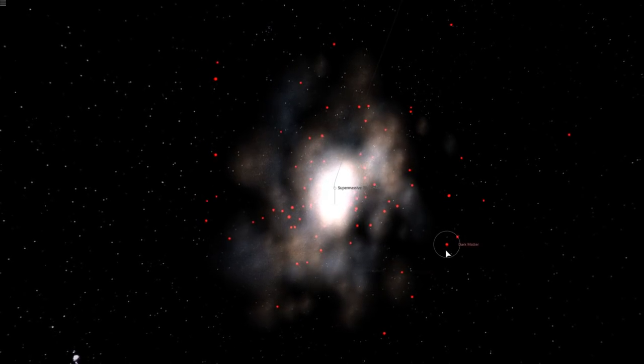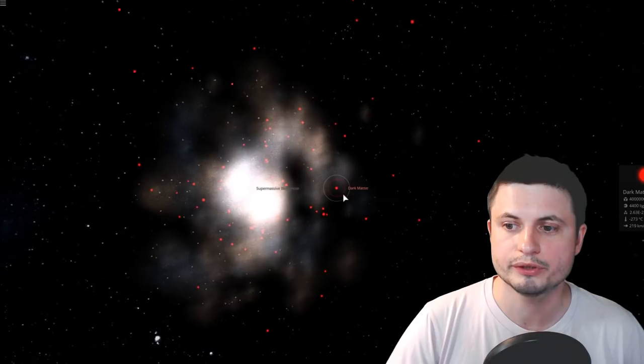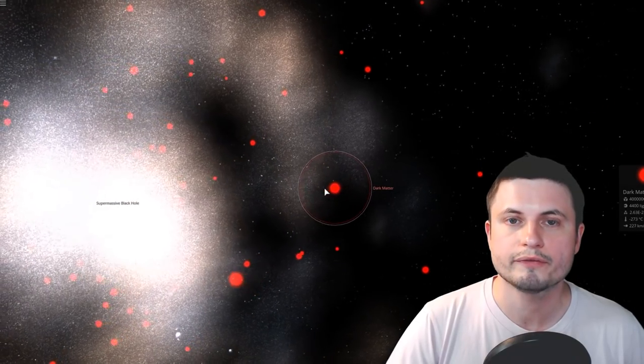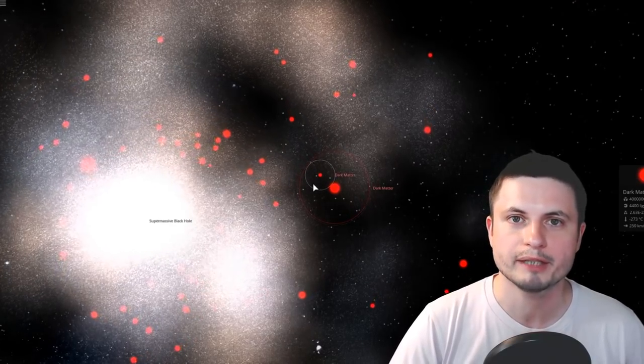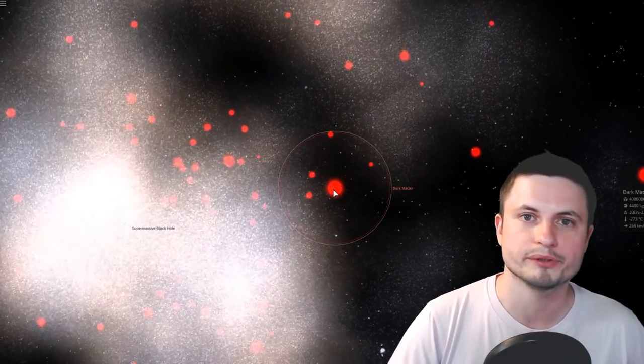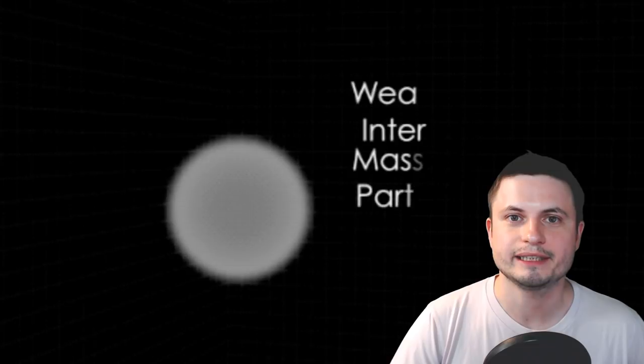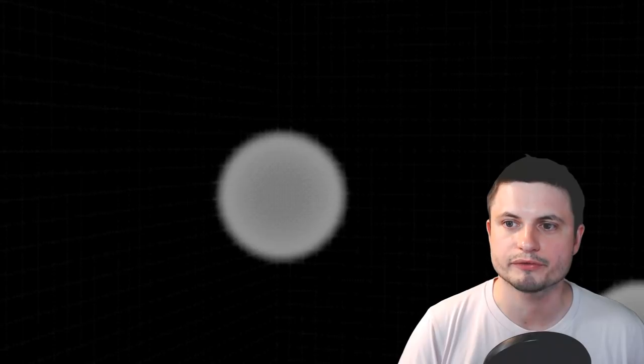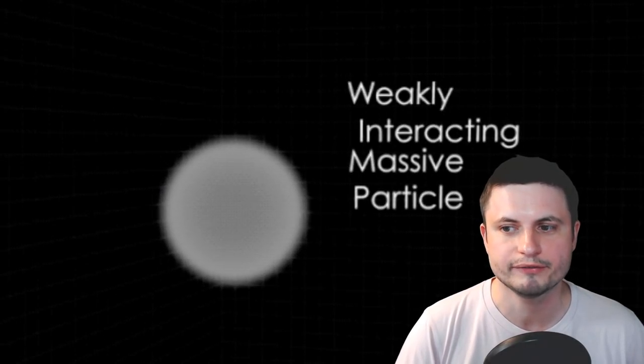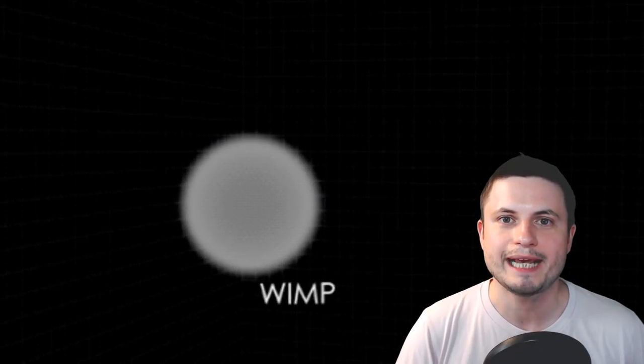Now this is kind of relevant to what we're talking about today, because in this model that Universe Sandbox uses, this is sort of one of the theories trying to explain what dark matter might be. These are called WIMPs, weakly interacting massive particles. Now they're slightly bigger than protons in terms of size, we think.